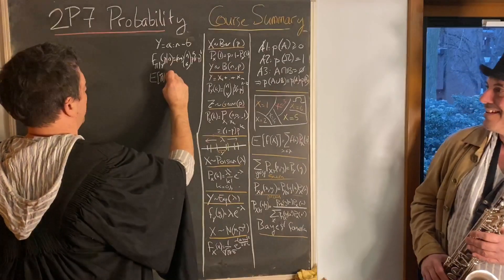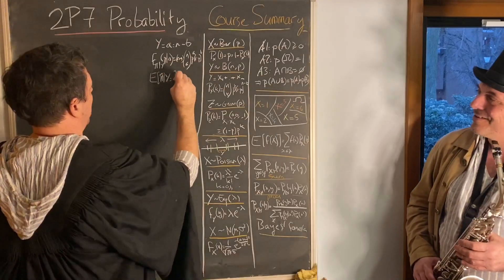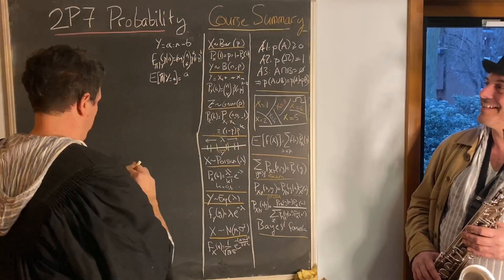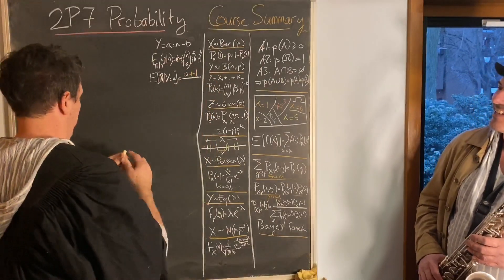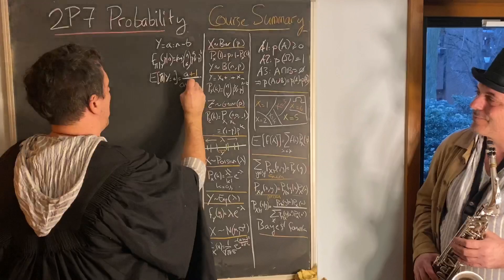When you count up your frequencies, add one above and two below, due to the beta density.